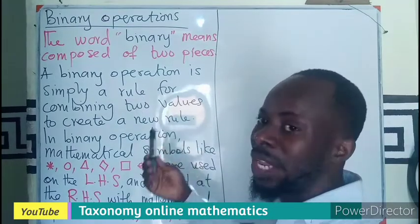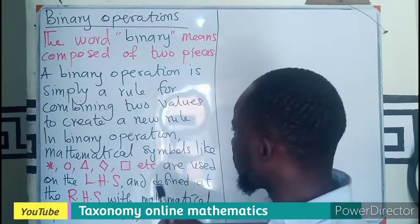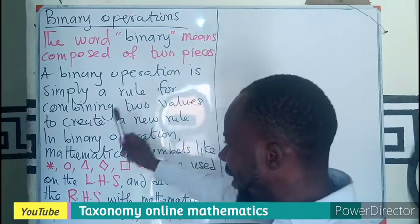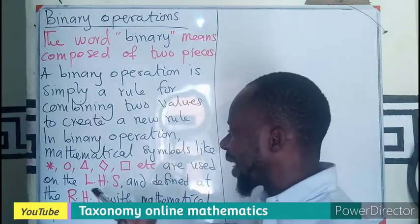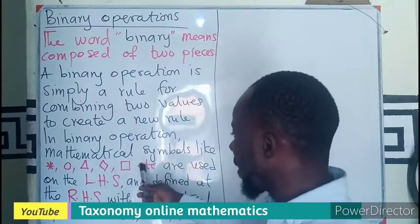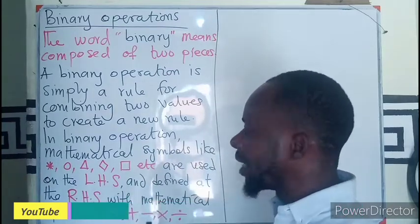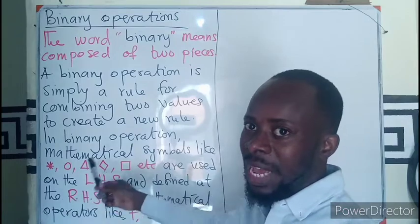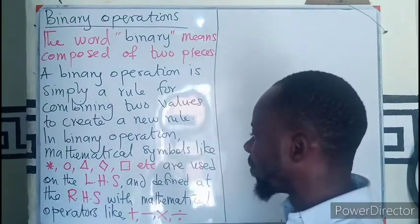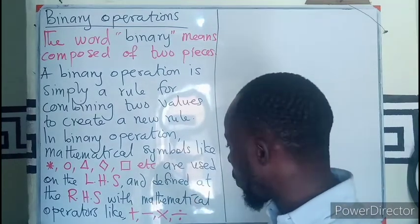A binary operation is simply a rule for combining two values — a rule given in order to combine two values to create a new result. Mathematical symbols such as the star, the circle, the triangle, the quadrilateral or square etc. are used on the left and they are defined on the right using mathematical operators such as plus, minus, times and division.